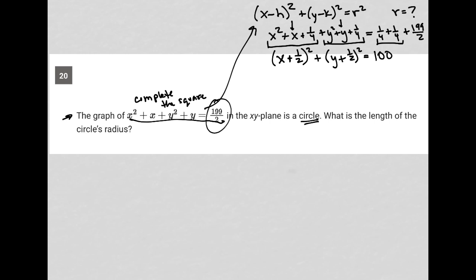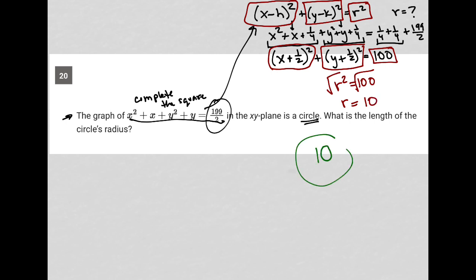So what's the length of the circle's radius? Well, when I start comparing or matching up—this now looks like this, this now looks like this, and 100 is our r² term. So r² equals 100. When I square root both sides, r equals 10. So there's my answer. That's the length of the radius: 10.